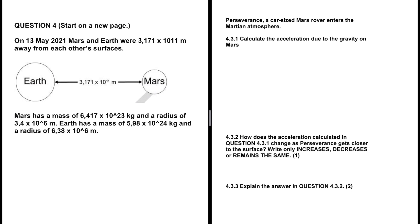Problem 4.3: a car-sized rover enters the atmosphere of Mars. The first question is to calculate the acceleration due to the gravity of Mars. The formula is: g equals capital G, the gravitational constant, multiplied by the mass of the body of interest — here that is Mars — divided by the radius of Mars squared. This equation applies to any planet or moon.